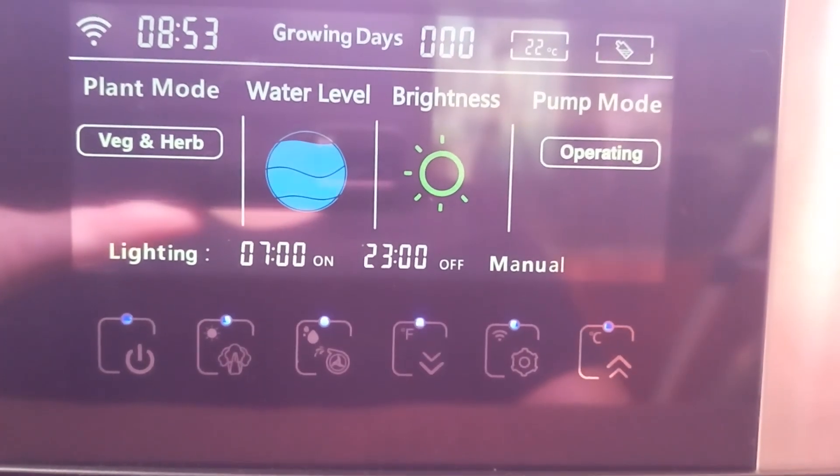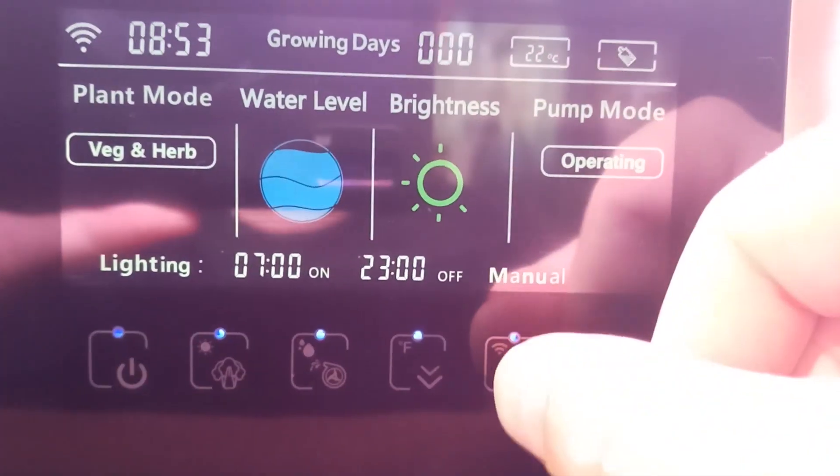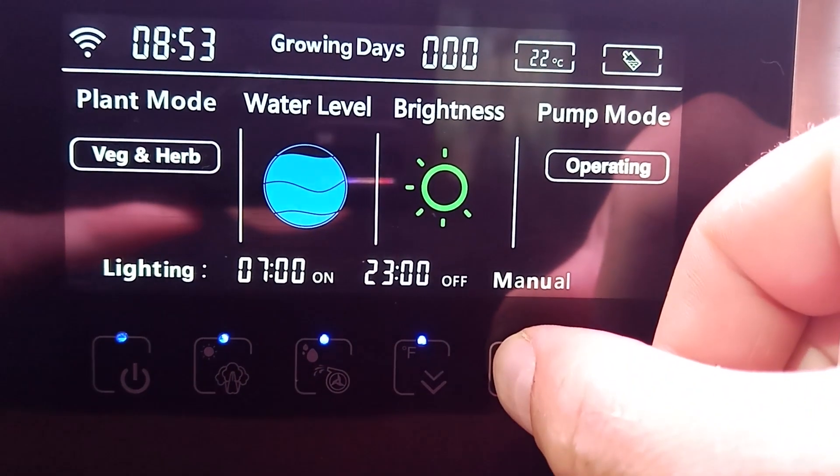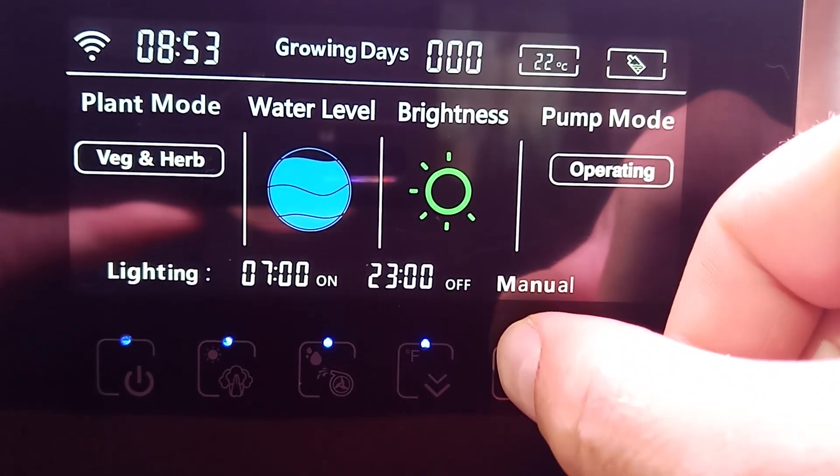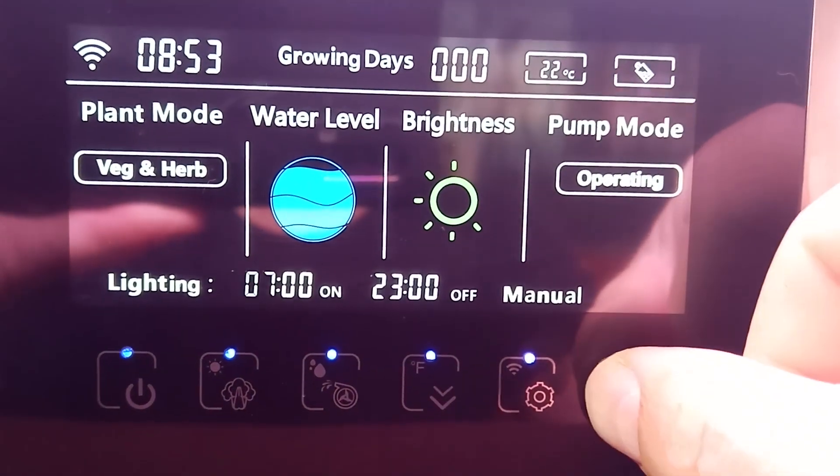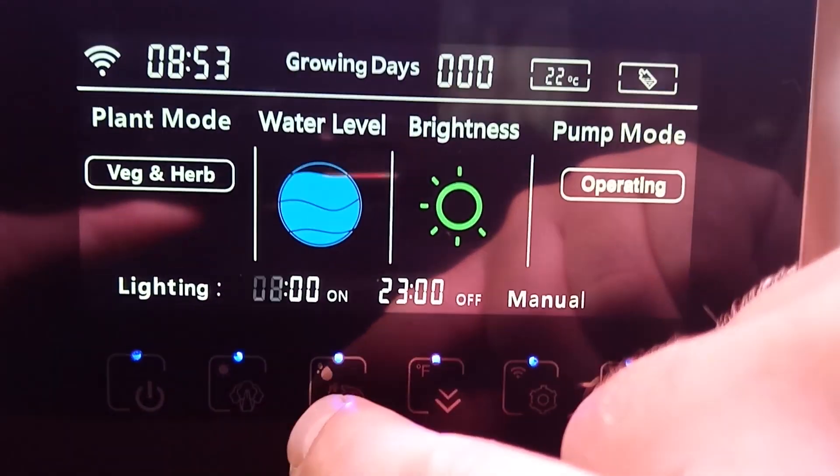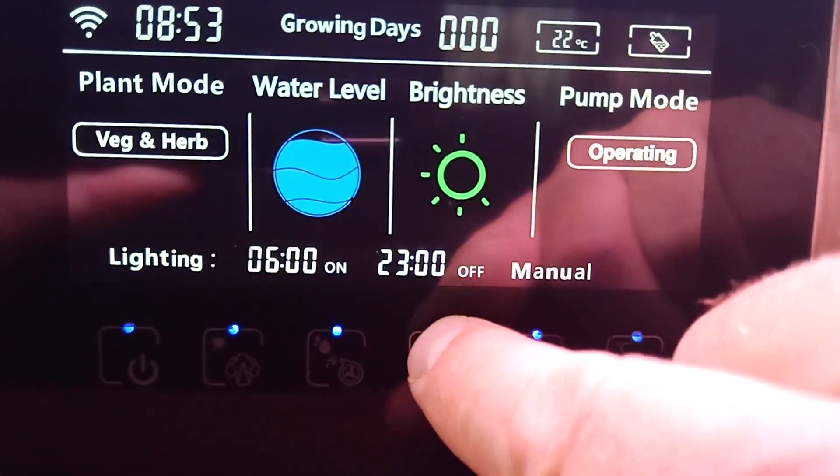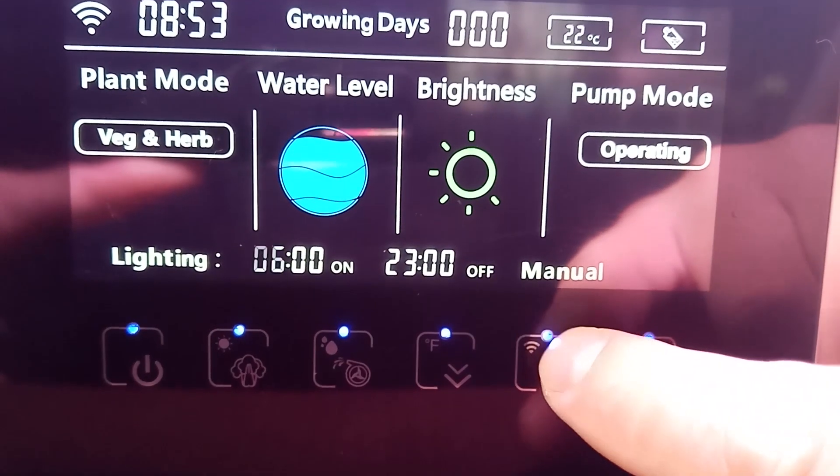Step 5. Set up the system. Insert the plug from the power adapter into the socket located at the back of the bowl. Then, plug the power adapter into an available power outlet. You should notice the power button lighting up once it's connected. Press the illuminated power button, and the screen will come to life.